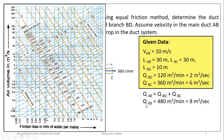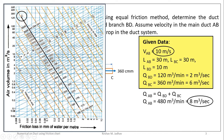For duct AB, we have V_AB equals 10 m/s and Q_AB equals 8 cubic meters per second. We locate the 10 m/s constant velocity line on the chart, then locate the volume flow rate of 8 cubic meters per second on the y-axis. At the intersection point, the constant diameter line passing through gives 1000 mm. Therefore, the diameter of duct section AB equals 1000 mm, which is 1 meter.